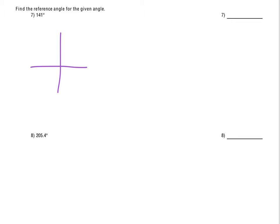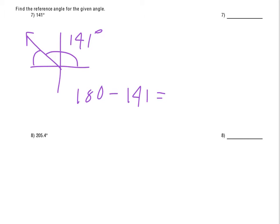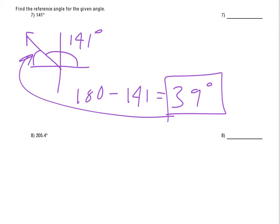For number 7, we're just finding the reference angle. I would start by sketching out the original angle, 141 degrees. It's past 90 degrees but not to 180. In reference angles, we ask: how much further do we have to go to get to 180? So we do 180 minus 141, and that tells us the reference angle is 39 degrees.